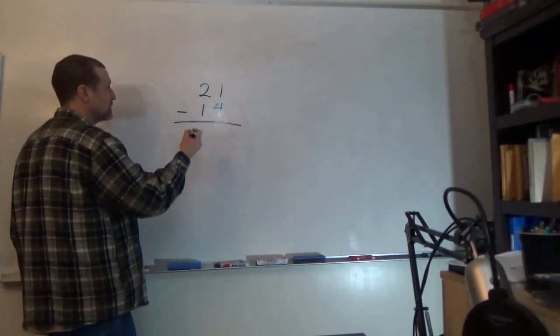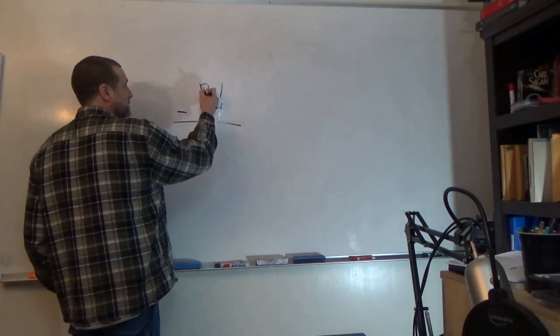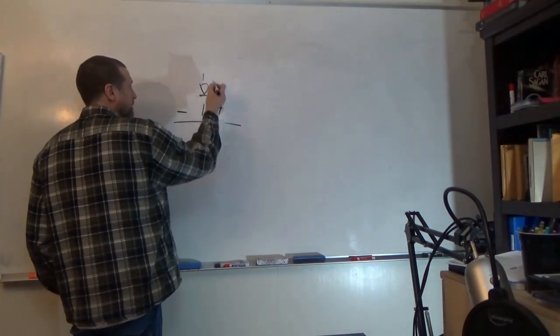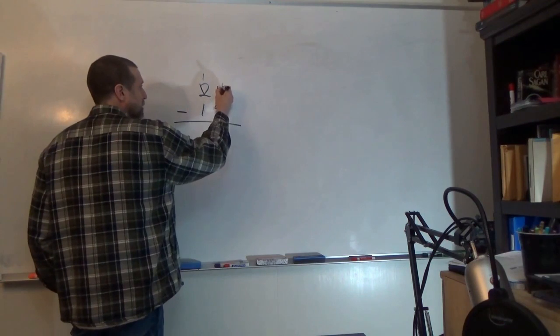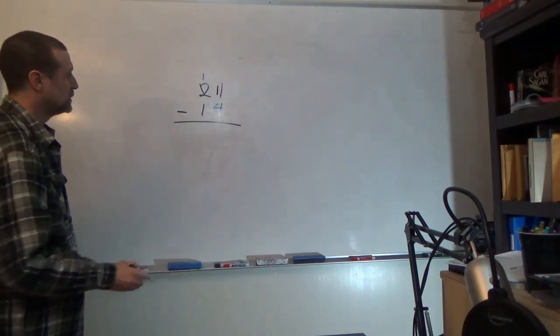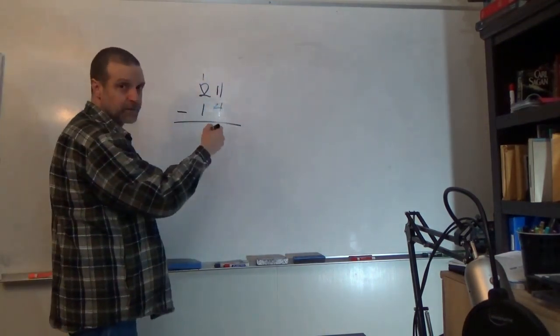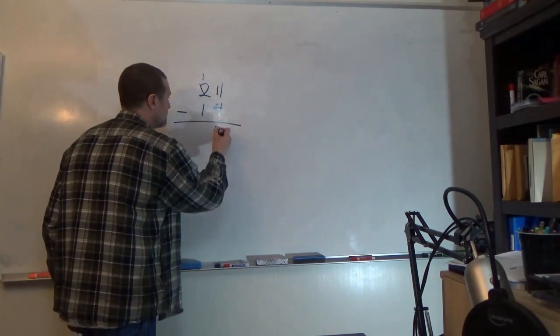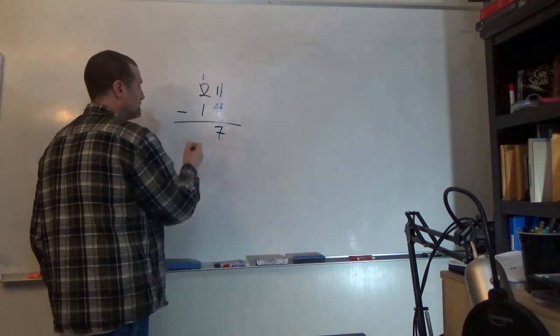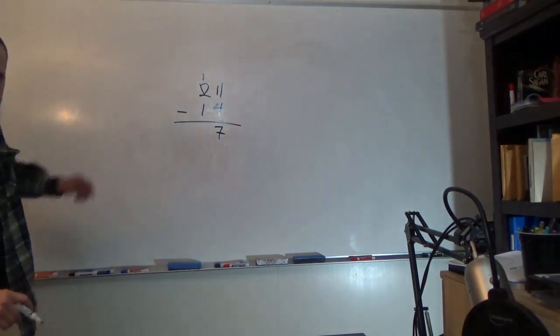So what do we do? Well what we do is we can borrow from our tens column. This two, we take one away from it so it becomes one, and now we put a one there. So eleven minus four is seven, and one minus one is zero.